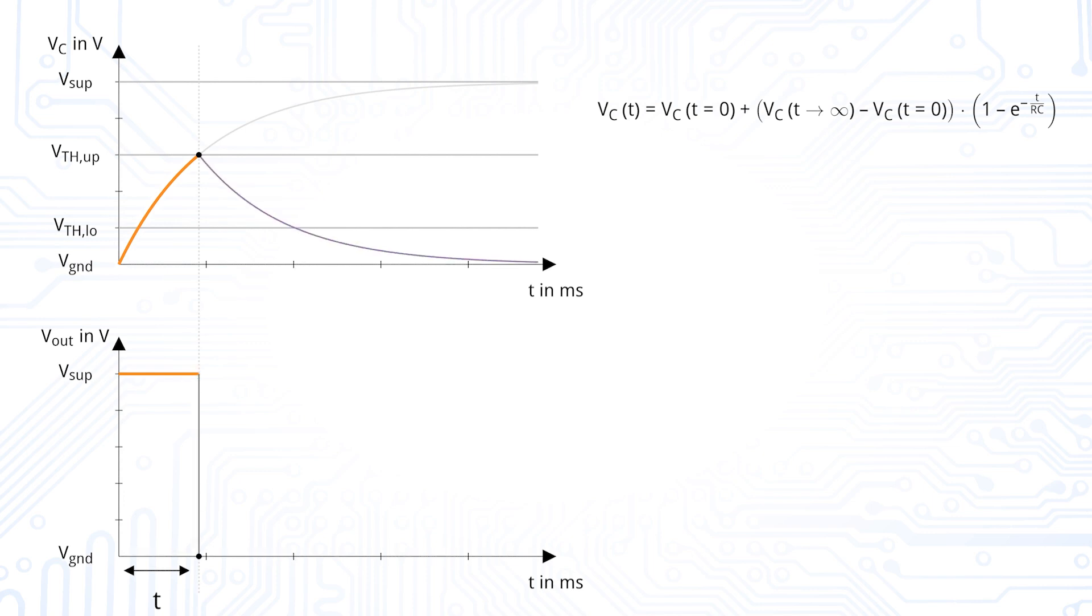This means that the capacitor starts to discharge. Again, we can use our known capacitor charging equation, whereas starting voltage is the upper threshold voltage and the target voltage is the lower supply voltage.